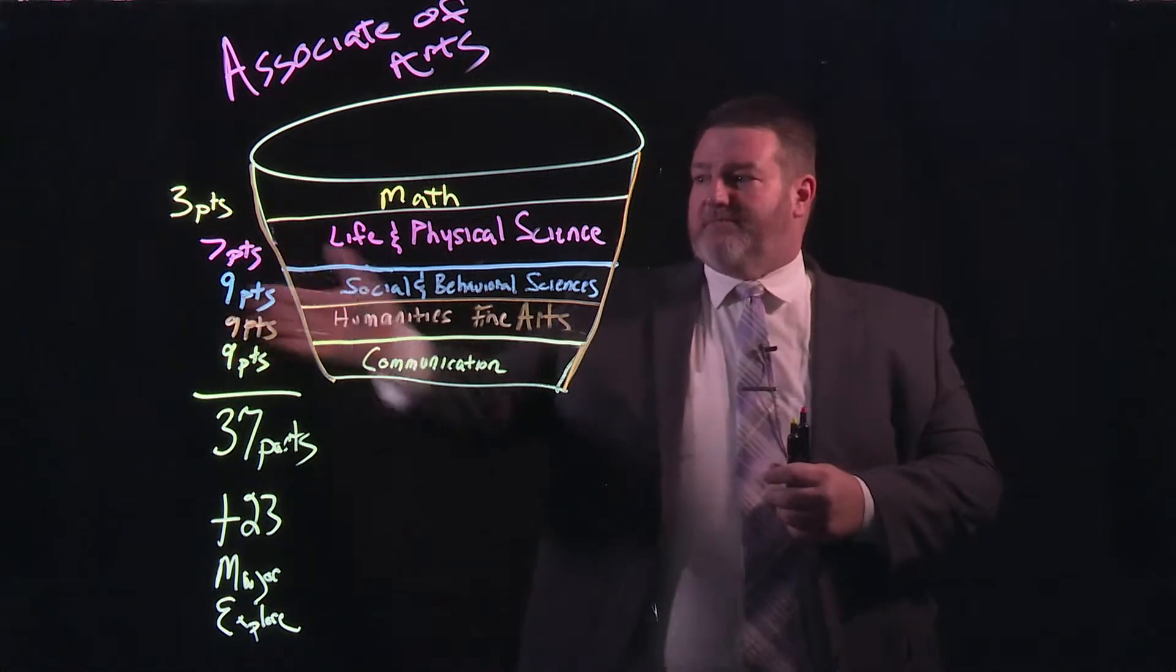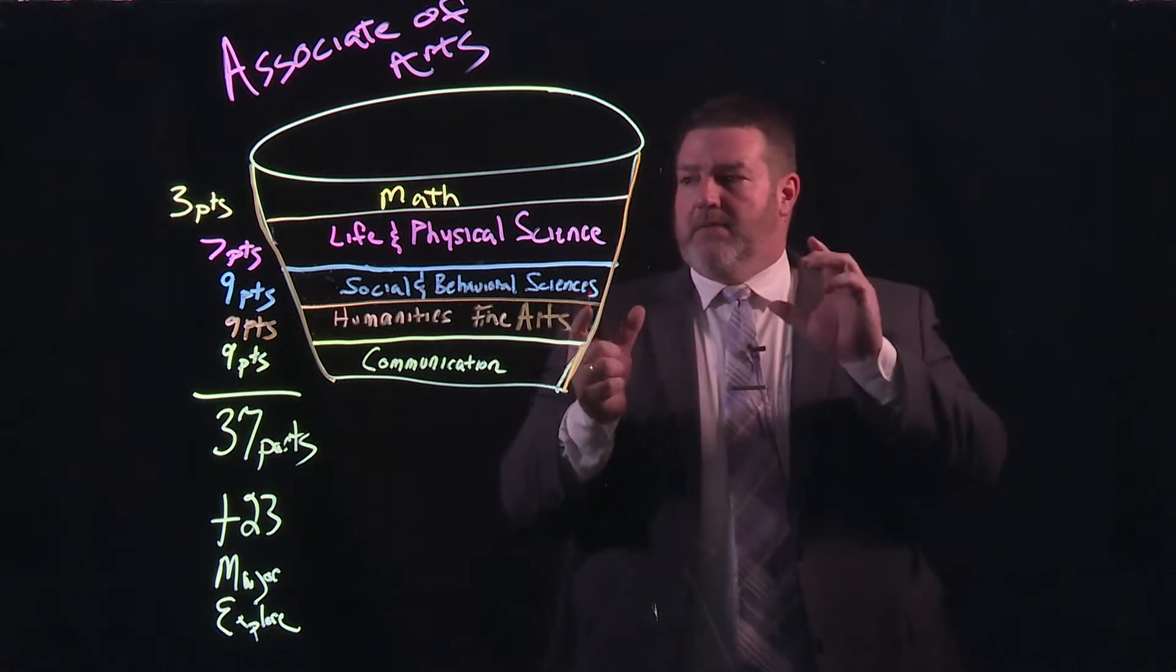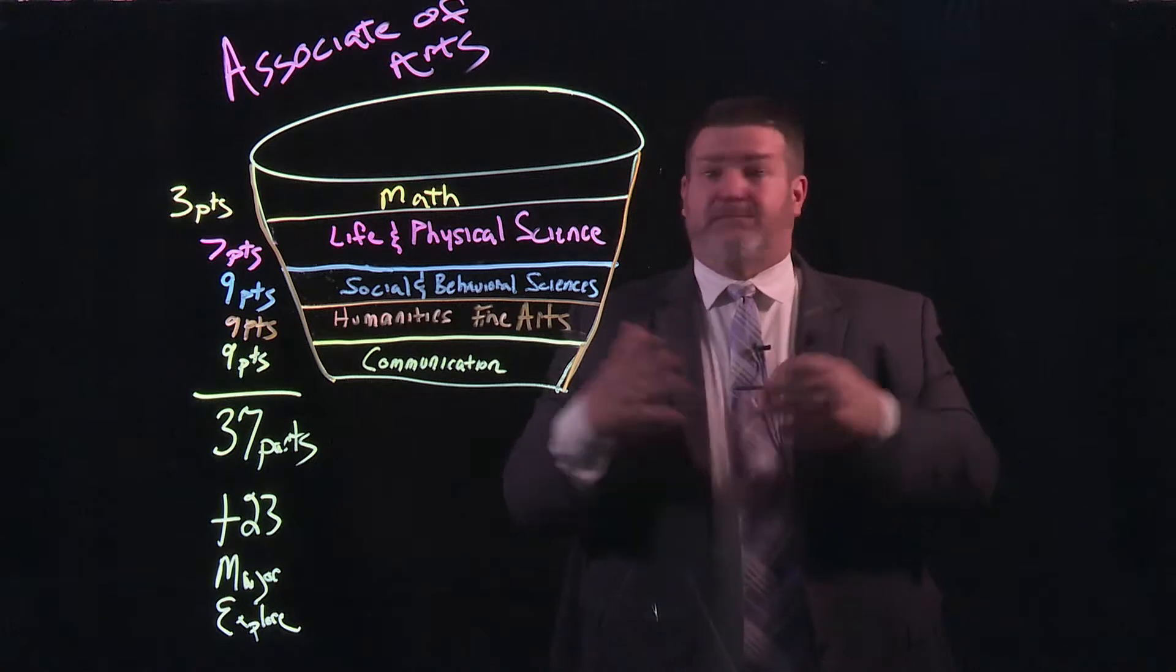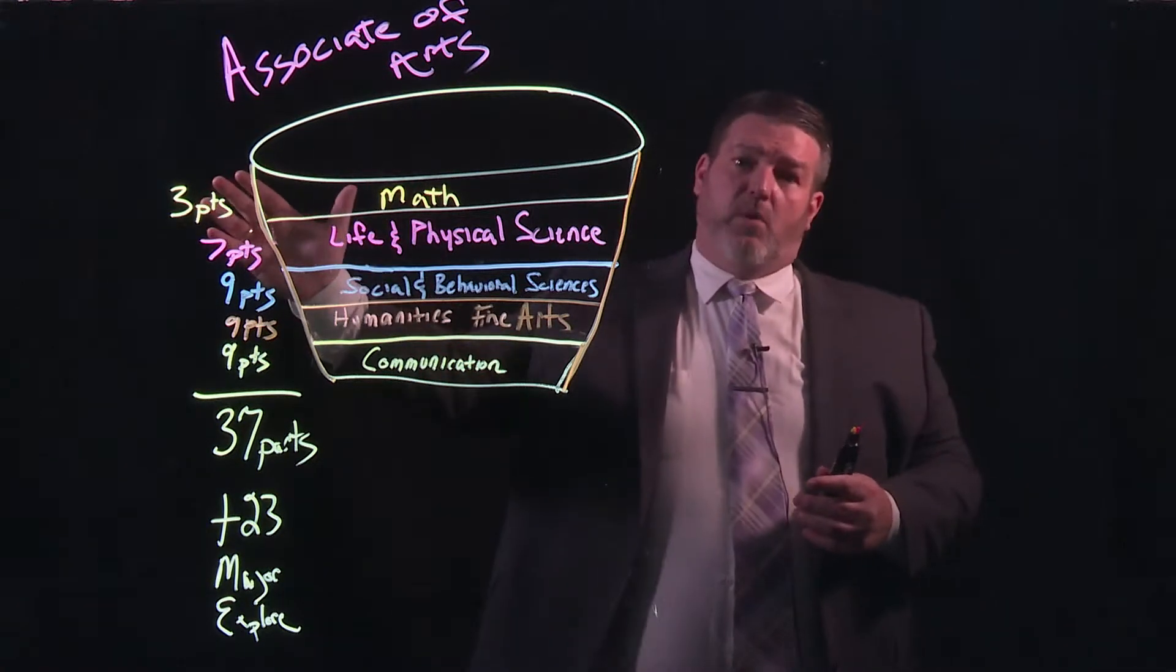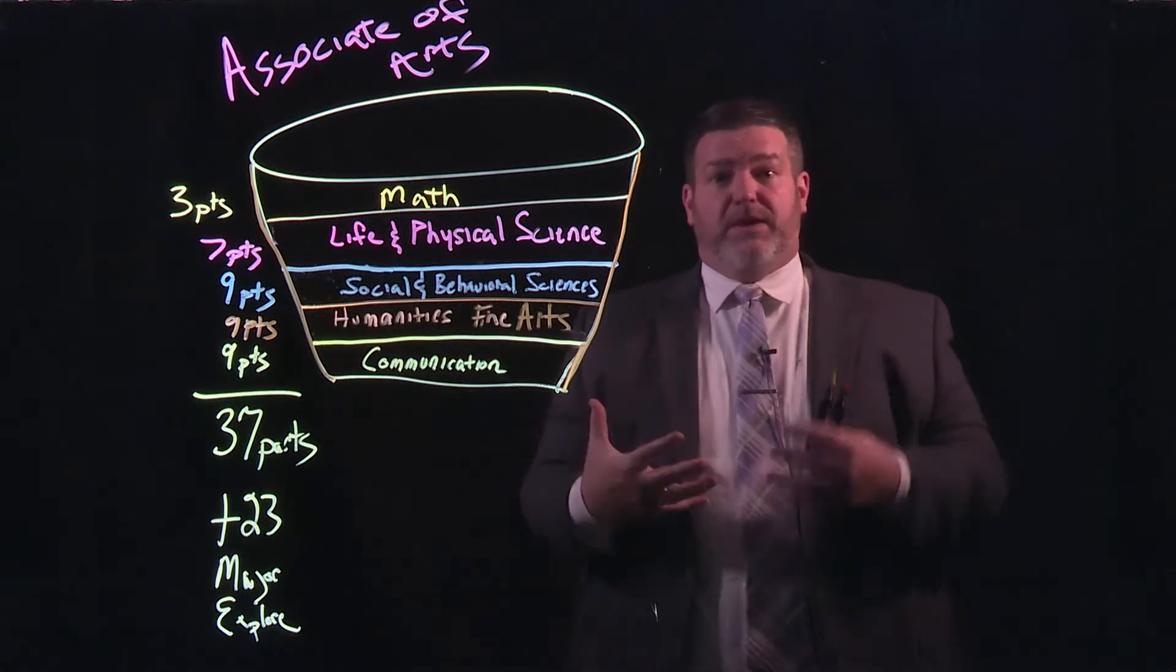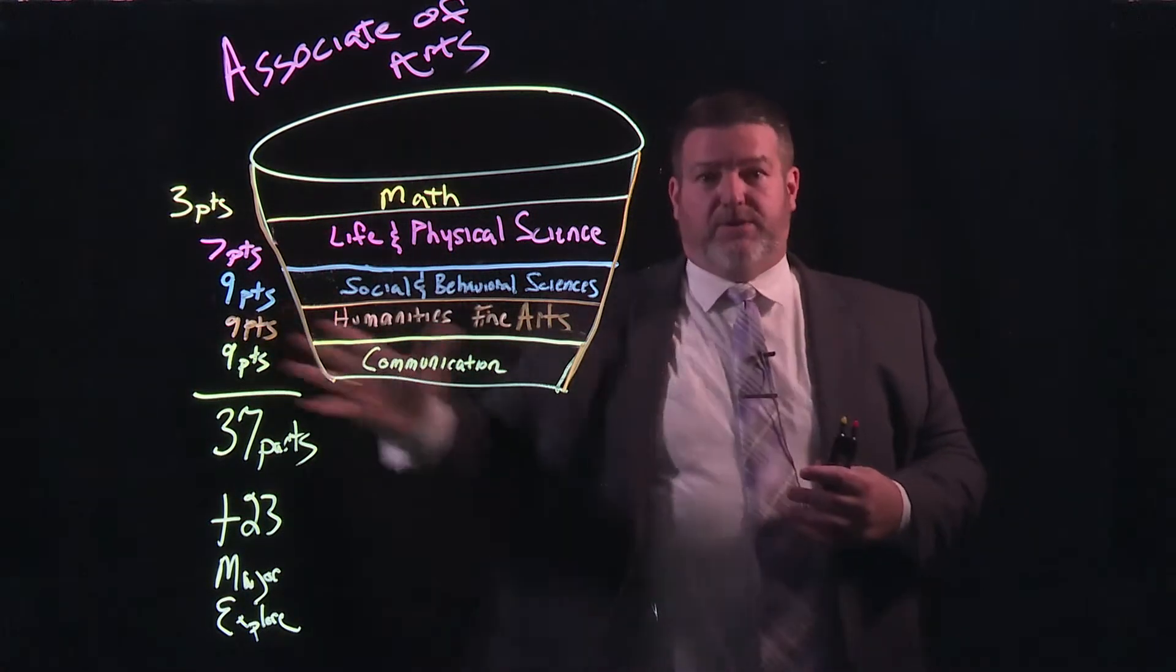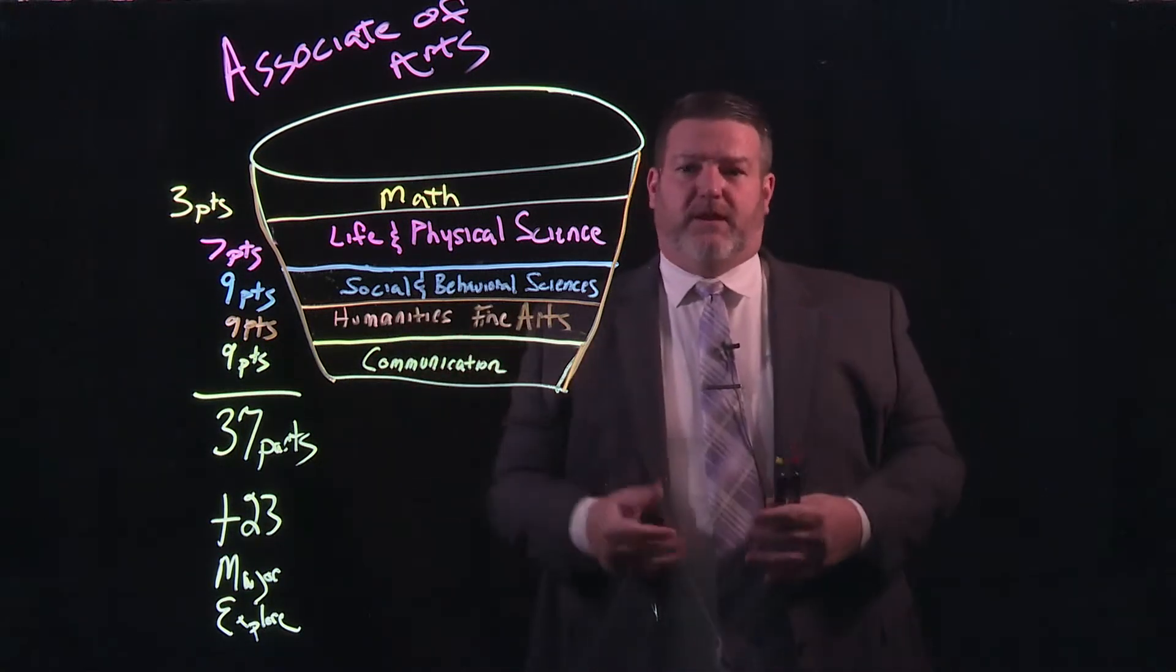And then we're going to add seven parts of life and physical science. We want to continually push that mode of inquiry and that scientific method. That is the basis of all education so we want to continue to push that. And then finally, we know quantitative literacy continues to be a challenge for our students, but we think it's important so we want to still make sure they're taking some courses in mathematics and understand the spatial relationships of all the knowledge.